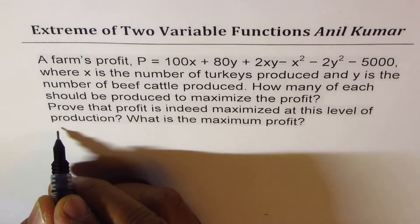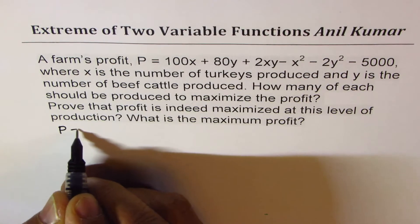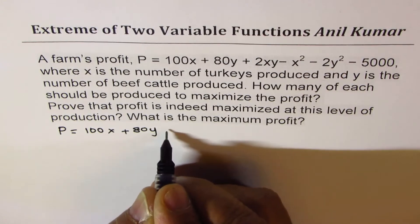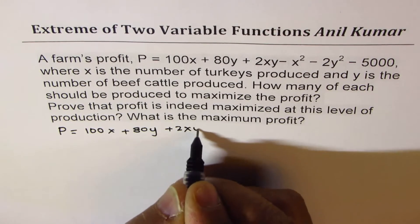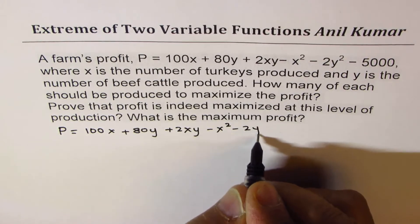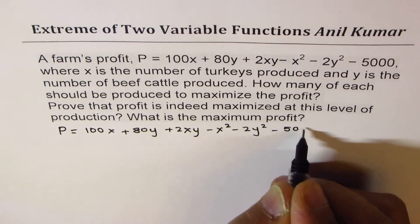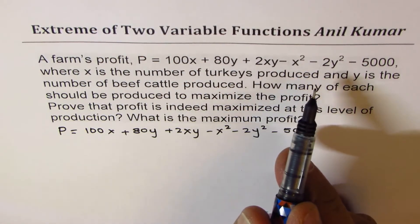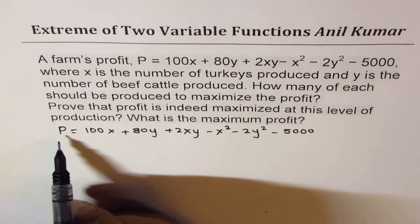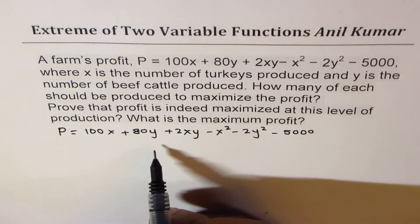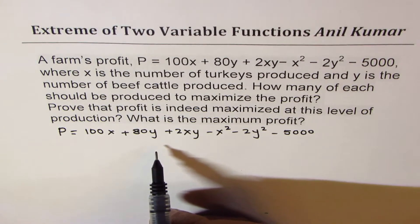So let's begin with the function itself, which is the profit function P equals 100x plus 80y plus 2xy minus x squared minus 2y squared minus 5000. Whenever you are doing multivariables, we do partial derivatives. So we will find the derivative of this function with respect to x, and the partial derivative with respect to y — that will give us two equations. From these two equations we can find the critical number.